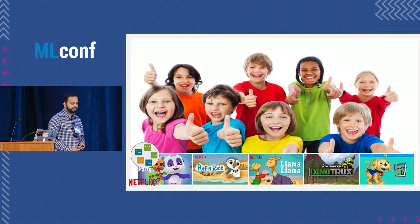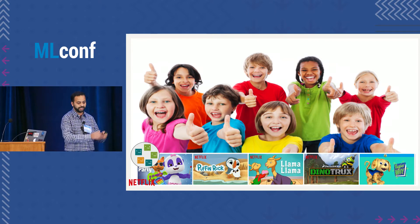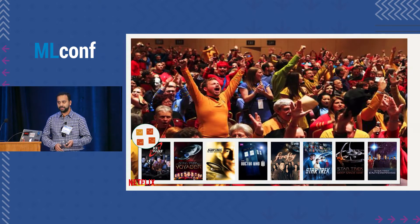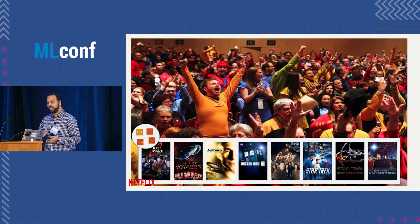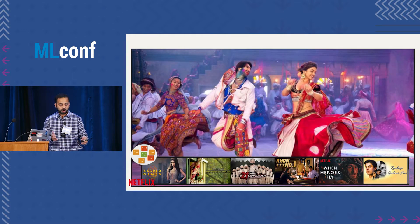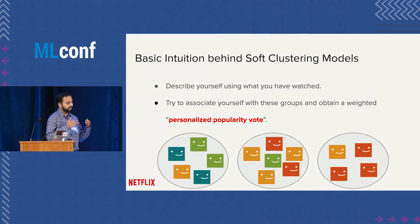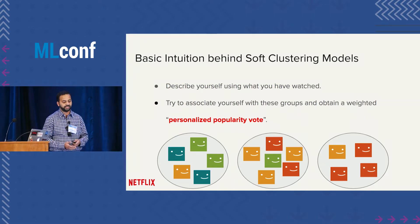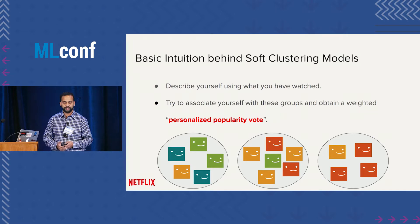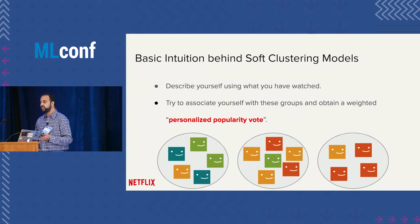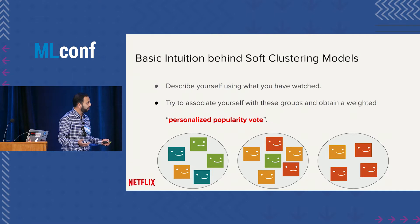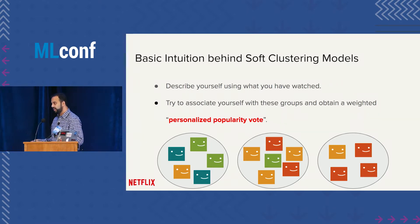Consider forming a group of people with similar tastes based on the videos they have previously watched. You may find a group of people who are into kids' content, a group who love everything about Star Trek, or a group who go crazy for Bollywood movies. Once you've established these clusters, the idea is to describe yourself using what you've watched, associate yourself with these groups, and obtain what we call a personalized popularity vote. This is the intuition behind almost every model we build.